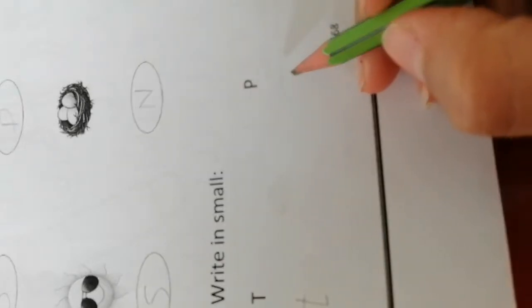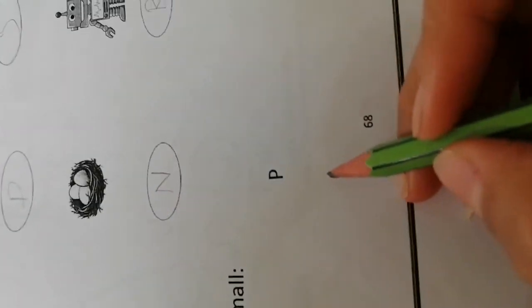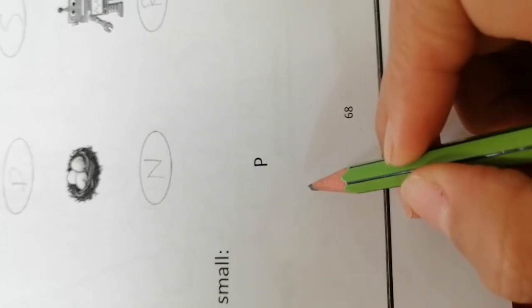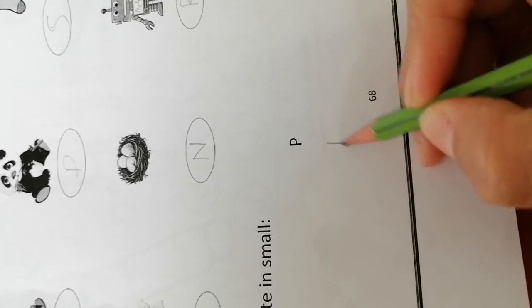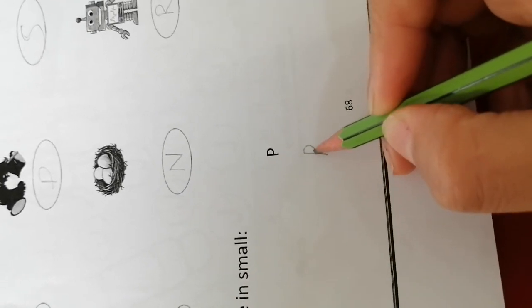And what is this? Capital P. How can you write a small P? Stick down, half circle.